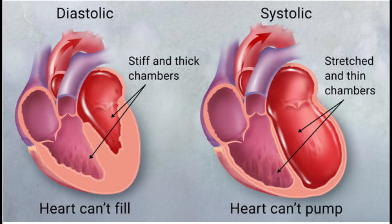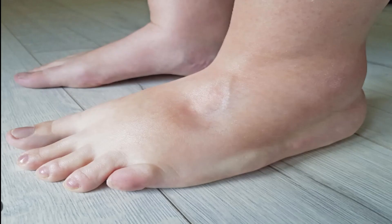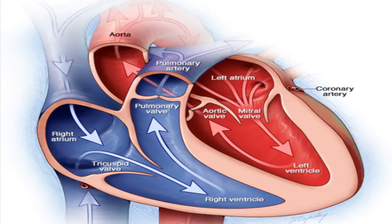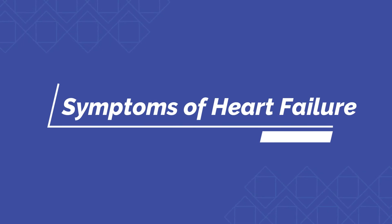Congestive heart failure refers to a specific stage of heart failure. It happens when blood that is returning to the heart gets backed up, causing congestion or swelling — also known as edema — in various parts of the body. Congestive heart failure can result from failure on the left side, right side, or both sides of your heart. It's a progressive condition, meaning that symptoms often become more severe over time.